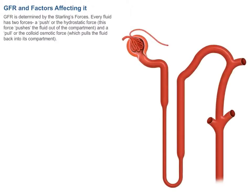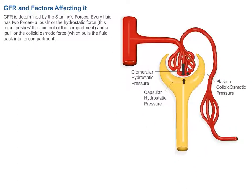Glomerular filtration rate (GFR) and the factors affecting it. GFR is determined by Starling's forces. Every fluid has two forces: a push force, or the hydrostatic force, which pushes fluid out of the compartment, and a pull force, or the colloid osmotic force, which pulls fluid back into its compartment.